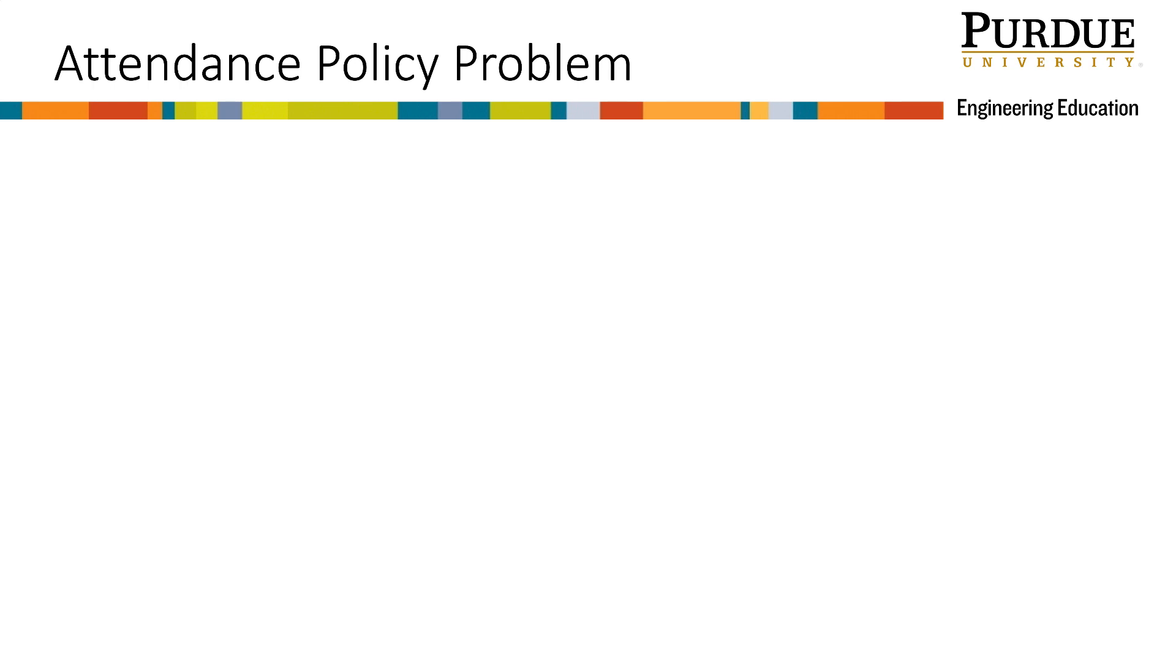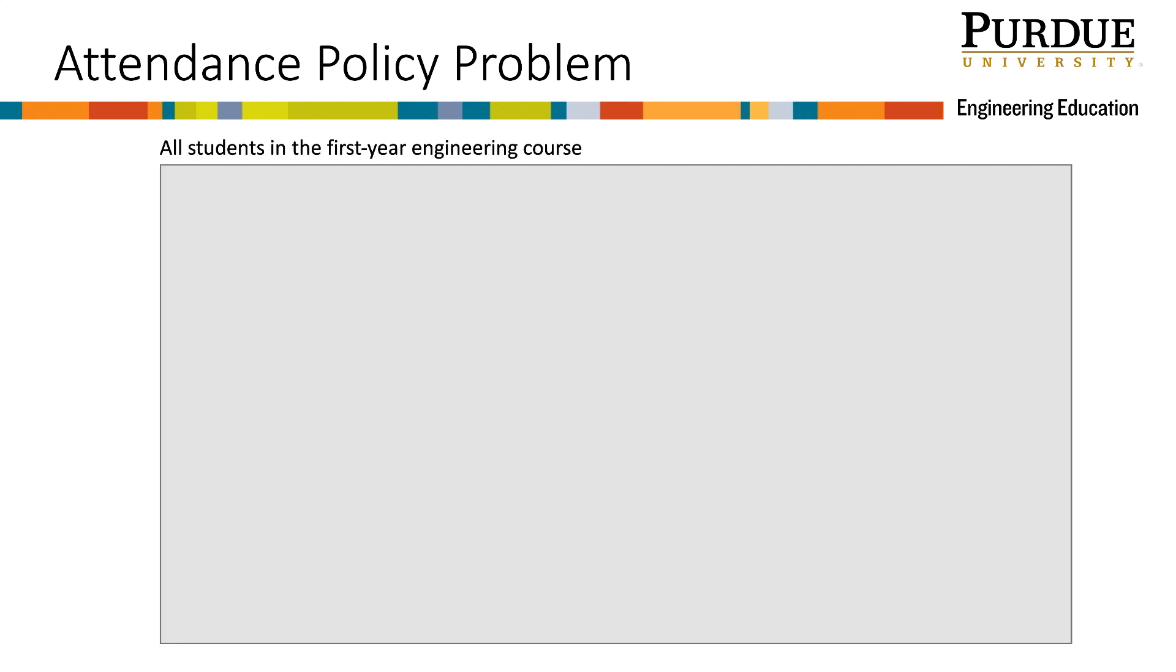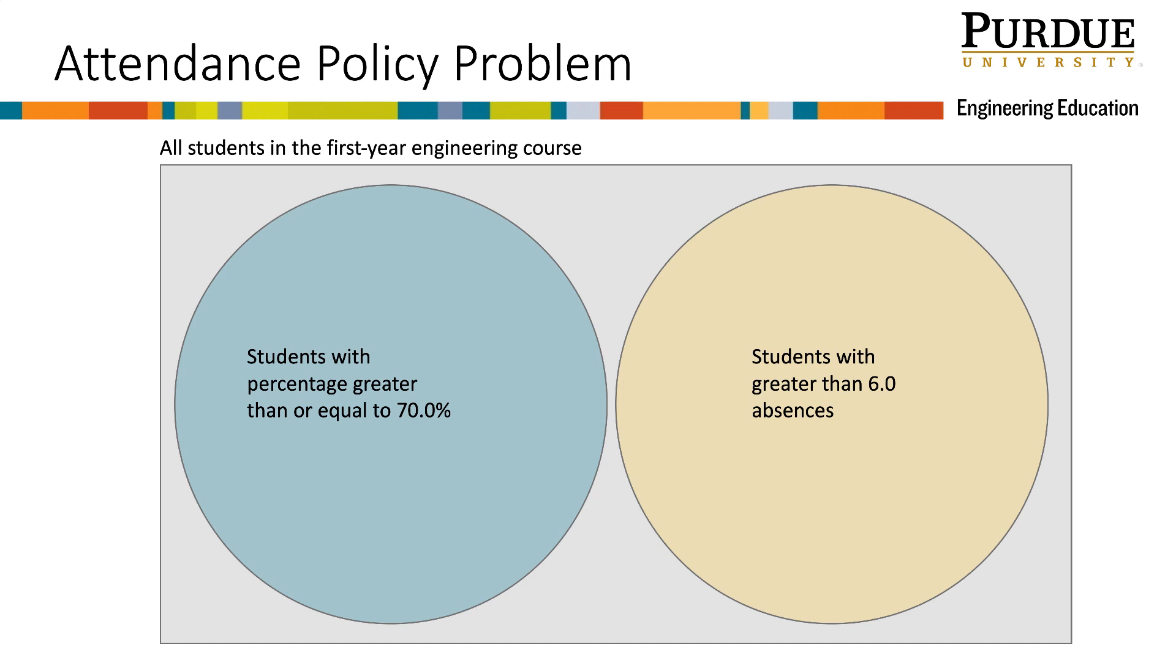So let's think through this problem. To do this, I am going to work things out with language and a simple Venn diagram. This box represents all students in a first year engineering course. Let's let this circle represent the subset of students that have a passing percentage at the end of the semester. There is another subset of students that have greater than 6.0 absences, which we will represent with this second circle. These students cannot receive a passing grade in the course. For a few students in this course, these circles will overlap.